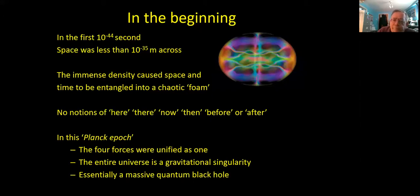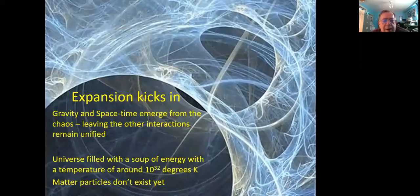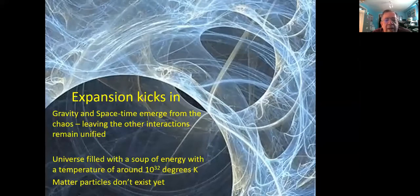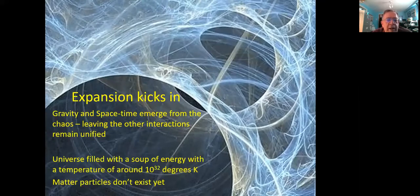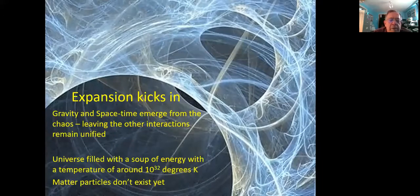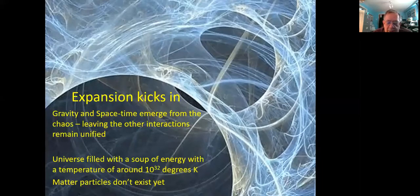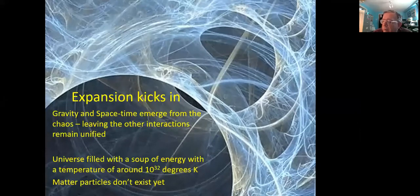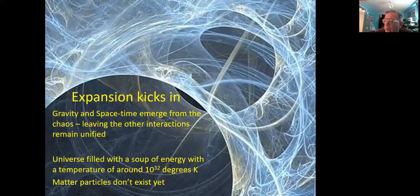So what happened next? Well, for some unknown reason, expansion kicks in. And this is really the Big Bang starting. And if you want to know what caused the Big Bang, then unfortunately, you probably need a philosopher or a priest to answer the question rather than a scientist at this point, because we have no idea. What we do believe, though, is that the expansion kicked in and gravity emerged because space time emerged from the chaos. The other three forces remained unified and the universe was just a soup of energy with a temperature of 10 to the power 32 degrees Kelvin. So hot that everything was flying around and there was so much energy that no particle was able to condense at this temperature. It would be destroyed by an interaction as soon as it did.